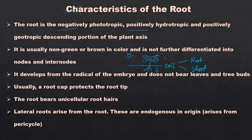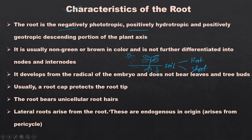It is usually non-green or brown in color and is not further differentiated into nodes and internodes. For the shoot you have nodes and internodes, but for roots you will not find nodes and internodes. It develops from the radical of the embryo and does not bear leaves and axillary buds. Usually a root cap protects the root tip. The root bears unicellular hairs known as root hairs. Lateral roots arise from the main root and are endogenous in origin, arising from the pericycle.